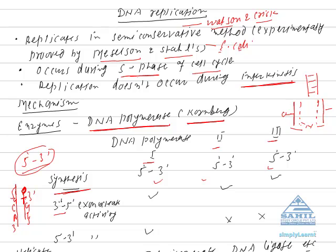The enzyme moves backward, removes the incorrect thymine, adds the correct cytosine, and then continues forward in the 5'-3' direction. Whenever DNA polymerase moves in the 3'-5' direction, it does so to remove a wrong base incorporated due to error. This is called 3'-5' exonuclease activity, and it is found in DNA polymerase 1, 2, and 3.